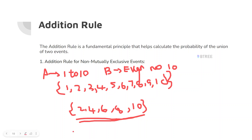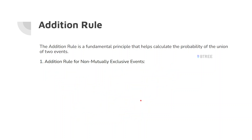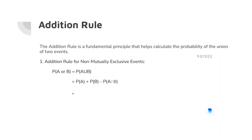This is a non-mutually exclusive event. Here there are intersections — common values: 2, 4, 6, 8, and 10. The formula is: P(A union B) = P(A) + P(B) − P(A intersection B). P(A) is the probability of A, P(B) is the probability of B, and P(A∩B) is their intersection — this applies to the non-mutually exclusive event.